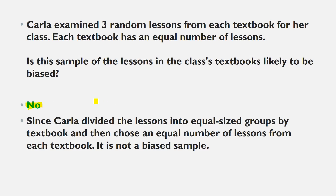There should be a reason for saying yes or no. The reason is: since Carla divided the lessons into equal-size groups by textbook and then chose an equal number of random lessons from each book, it is not a biased sample.